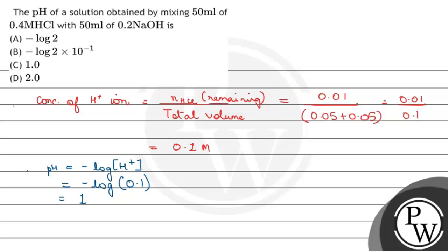The pH of the solution is 1. We can say the pH of a solution obtained by mixing 50 ml of 0.4 molar HCl with 50 ml of 0.2 molar NaOH is option number C, 1. I hope you understood it well. Thank you and best of luck.